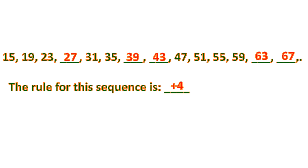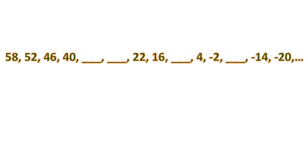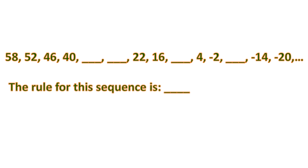This type of problem is usually harder than the previous one because you can't just generate directly — the hardest part is finding the rule and following the pattern. But in this case it's simple. There are some problems with multiple steps involving two operations. Let's have another example: we have a sequence and we're gonna find the rule. Looking at the first two numbers, 58 and 52, it might be minus 6, since 58 minus 6 is 52.